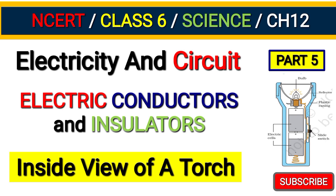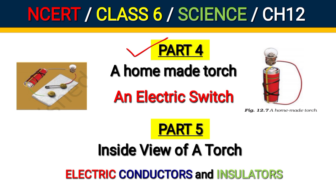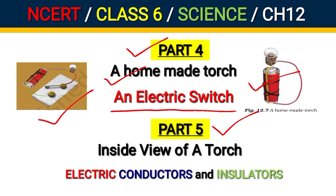Hello everyone, welcome to my channel Alpha Knowledge Box. This is the science series for Class 6. We are studying NCERT Class 6 Science Chapter 12, Electricity and Circuit. This is the Part 5 video of this chapter. In Part 4, two topics were covered: number one, a homemade torch, and number two, an electric switch. In Part 5, two topics are covered: number one, inside view of a torch, and number two, electric conductors and insulators.